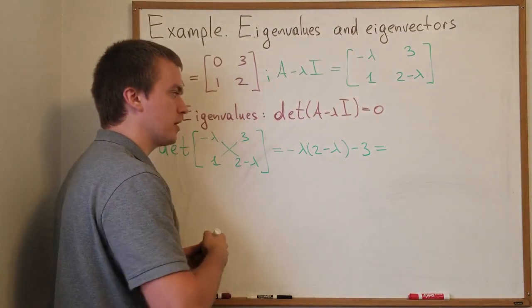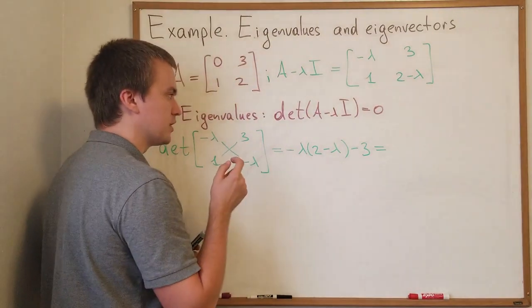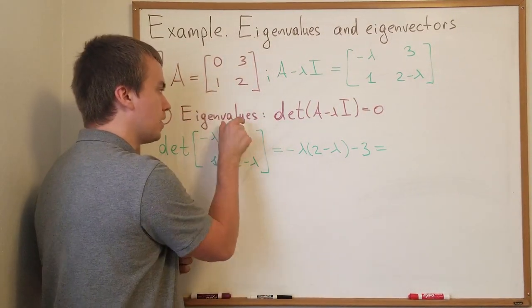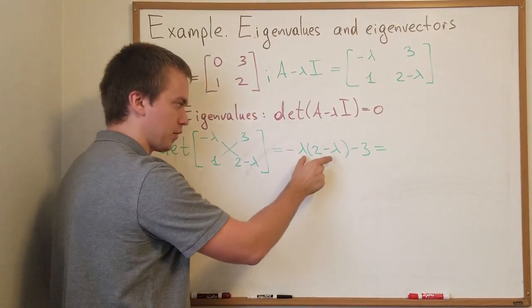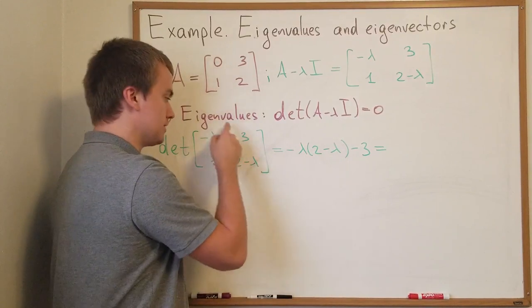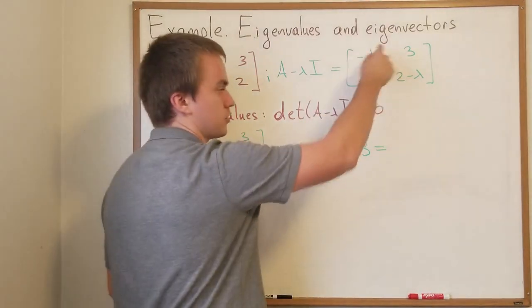And we can see here we got polynomial. So we know that the eigenvalues are going to be roots of this polynomial. Because for one particular eigenvalue which is the root of this polynomial this matrix is going to be singular.